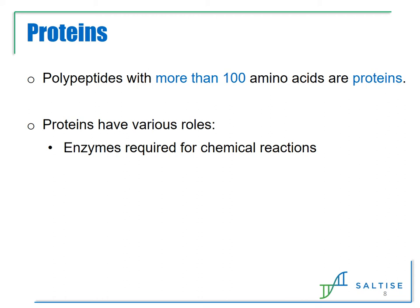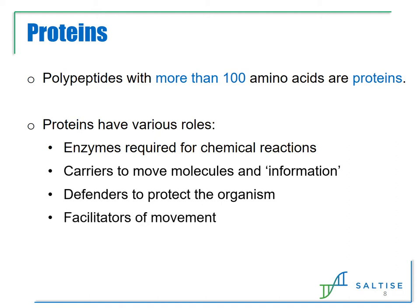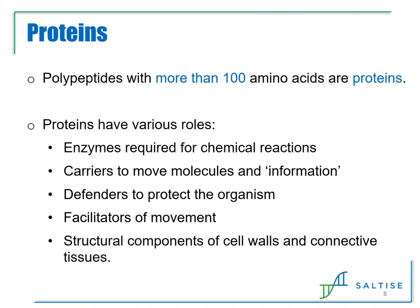Proteins have very diverse roles in living organisms. They can be enzymes, which facilitate chemical reactions — without enzymes, living things would cease to exist as all the chemical reactions in the biological system would be too slow. They can move other molecules around, such as oxygen, as well as carry information, such as hormones. Proteins like antibodies help to fight foreign substances such as harmful bacteria. Proteins found in muscles help with movement, and they are also found in cell walls and connective tissues. Proteins also help to maintain blood pH; without them, there could be large, life-threatening changes in pH.